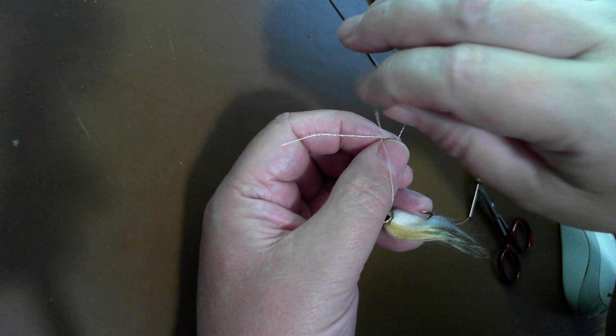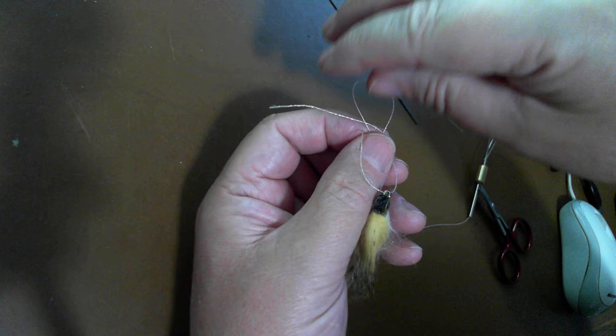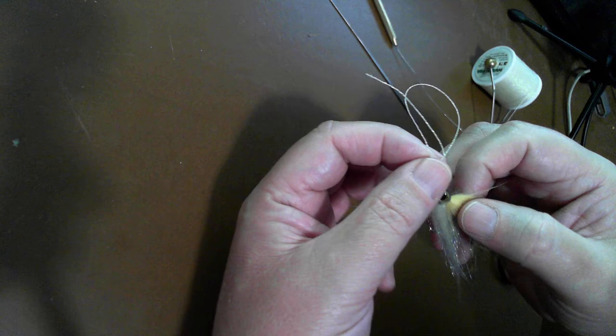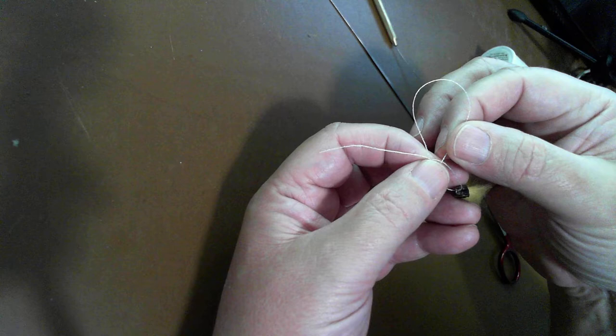You can see here as I pull on this, this lower loop keeps getting smaller. If I pull on one side and the lower loop gets smaller, I'm doing it right. If I try pulling on the other side of that loop, it actually, make sure that doesn't undo...